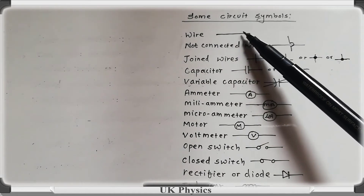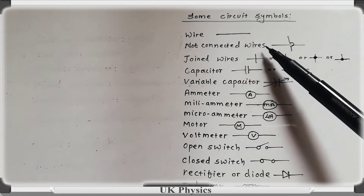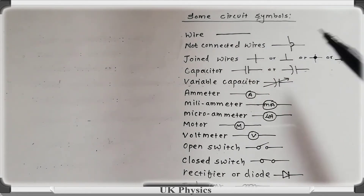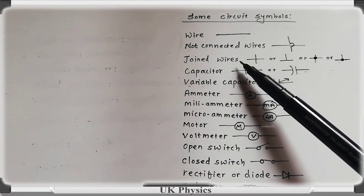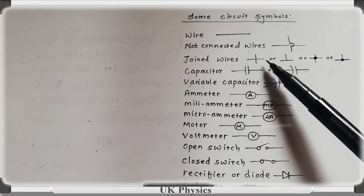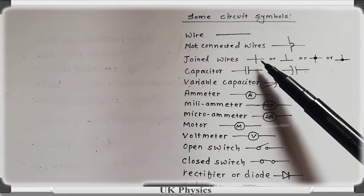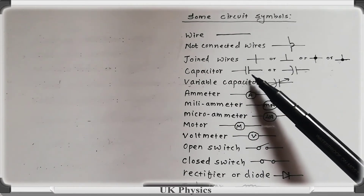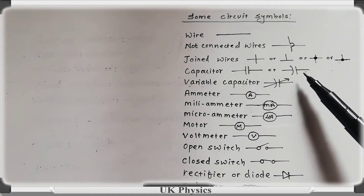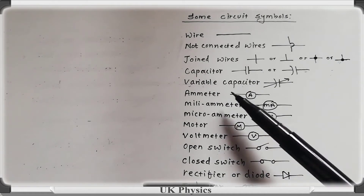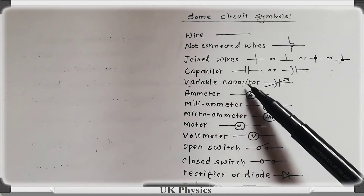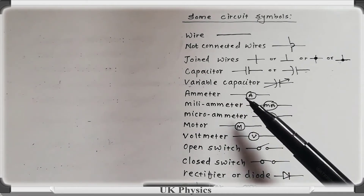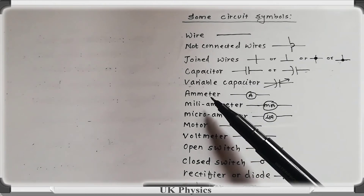Now let's talk about some circuit symbols. This is the circuit symbol of a wire. This is the circuit symbol of not connected wires. This is the circuit symbol of joint wires. And this is the circuit symbol of a capacitor and an emitter.